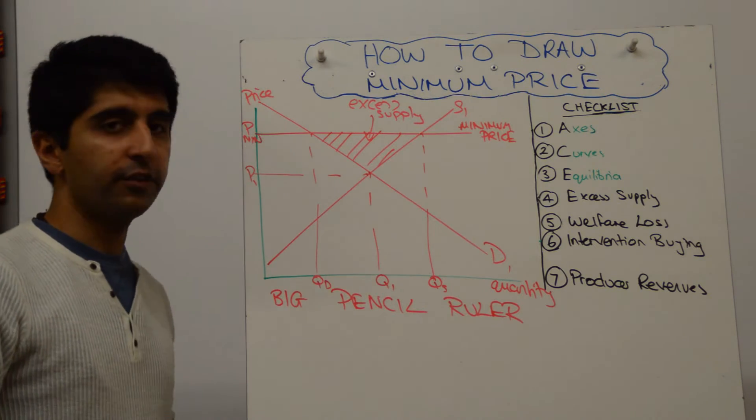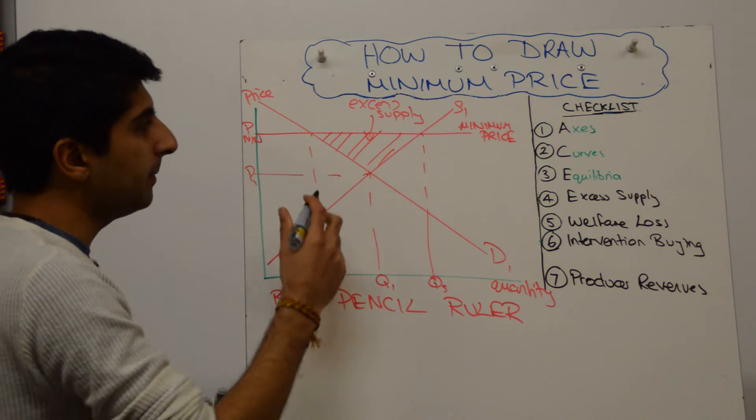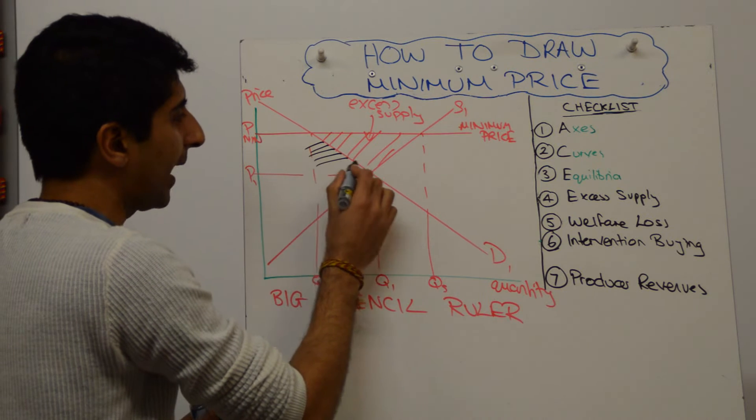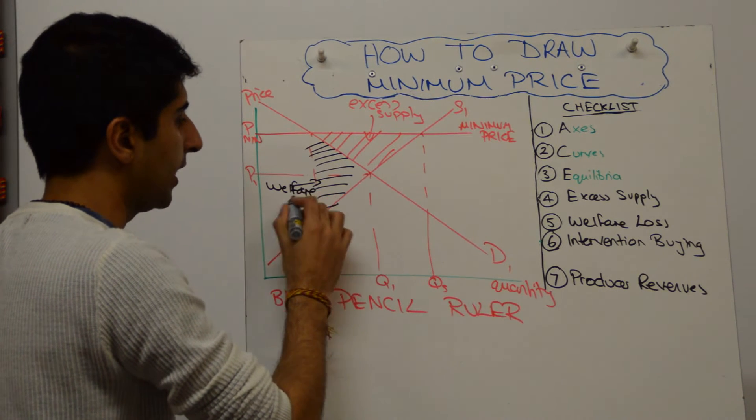What about the welfare loss? Well, I've explained why there is welfare loss in one of my previous videos. Links are in the description below. But simply, it's this black triangle. Okay, so that's the welfare loss, which you can just learn and shade in.